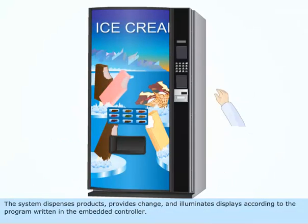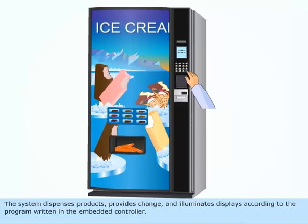The vending machine system dispenses products, provides change, and illuminates displays according to the program written in the embedded controller.